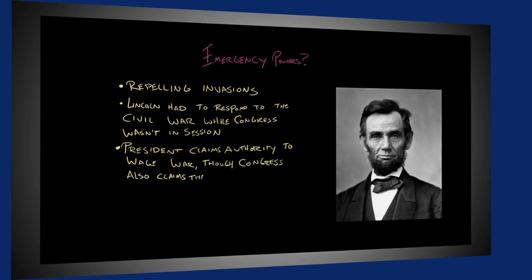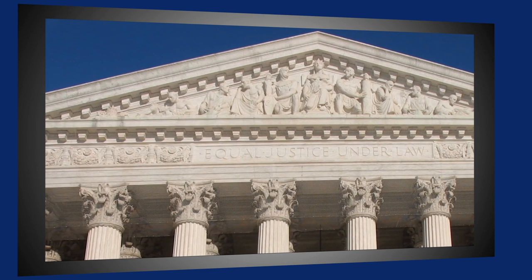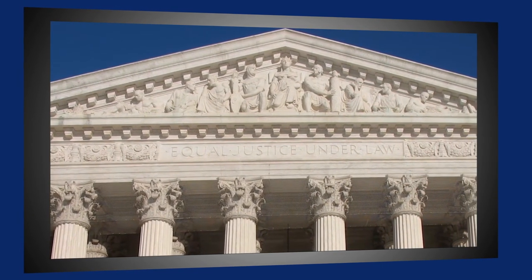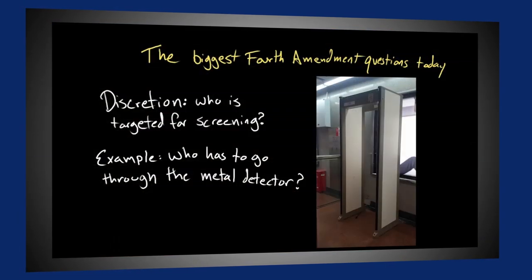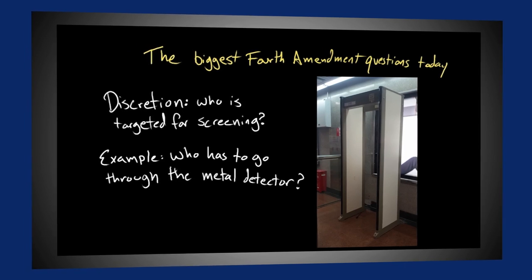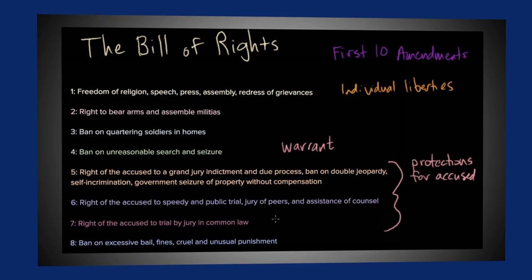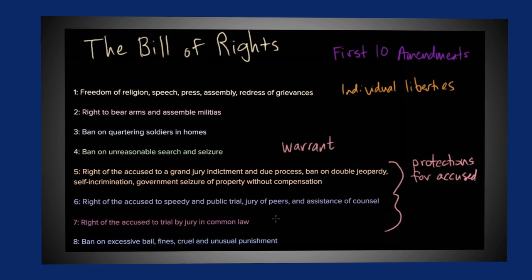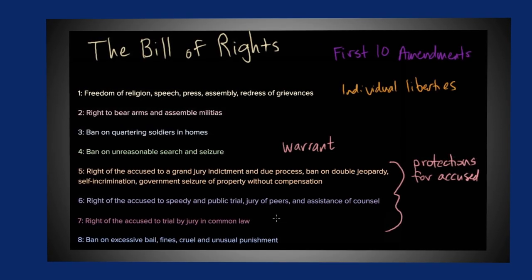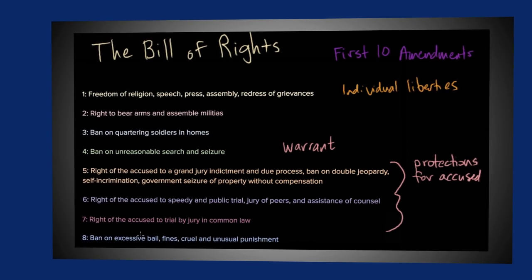We're also going to talk about how the judicial system, in particular the Supreme Court, has interpreted the United States Constitution, and how that has had a whole chain of side effects on our everyday lives. And last but not least, we're going to talk about what rights and liberties are protected by the Bill of Rights inside of the United States Constitution.